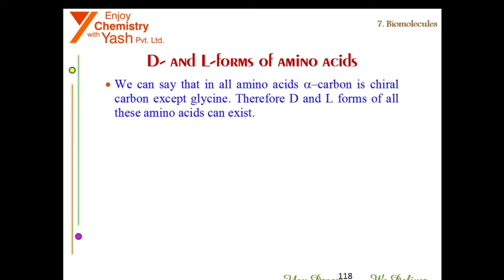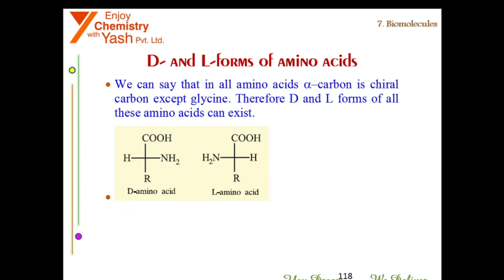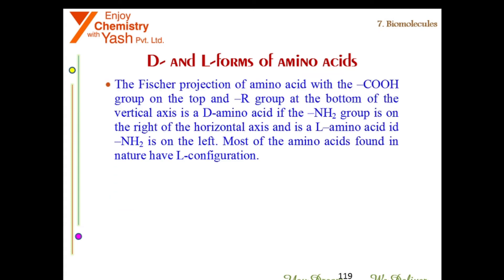In all amino acids, the alpha carbon is a chiral carbon except in glycine. Therefore, D and L forms of all these amino acids can exist. In the Fischer projection, with the COOH group on top and the R group at the bottom of the vertical axis, it is a D amino acid if the NH2 group is on the right-hand side, and an L amino acid if NH2 is on the left-hand side. Most of the amino acids found in nature have the L configuration.